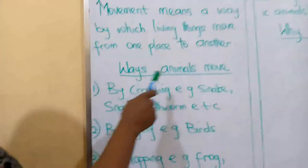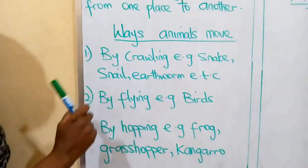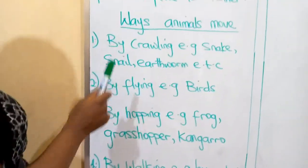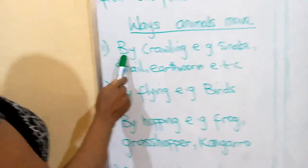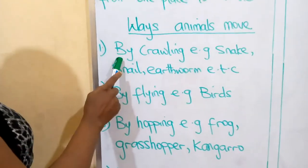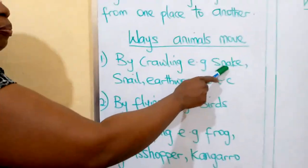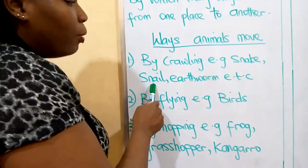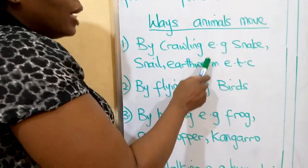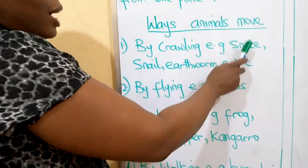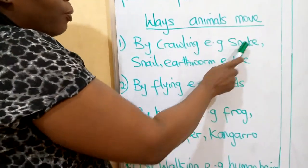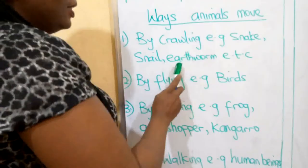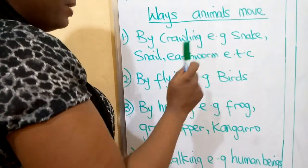We are going to look at ways animals move. There are different ways animals move. Number one: by crawling. I don't know if you have seen the snake before. Snake crawls. Snail crawls. And earthworm crawls. There are so many animals that crawl. Examples of animals that crawl: we have the snake, the earthworm, and the snail.